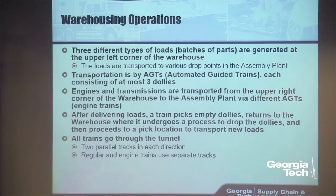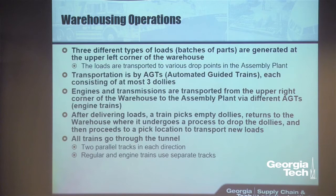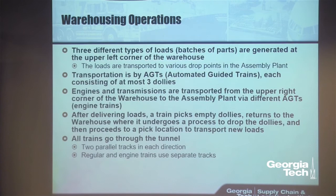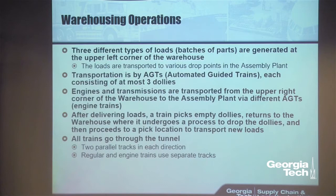There are three different types of loads. Some contain parts for a single car; another type includes combinations of engines and transmissions. They all go on dollies, and dollies are moved by automated guided trains — AGTs. The train picks up dollies, moves through paths, goes through the tunnel, and moves to the assembly line, where there are multiple drop points. Then it does a loop — picks up empty dollies, comes back to the warehousing facility, goes through a process to unload, and moves back again.